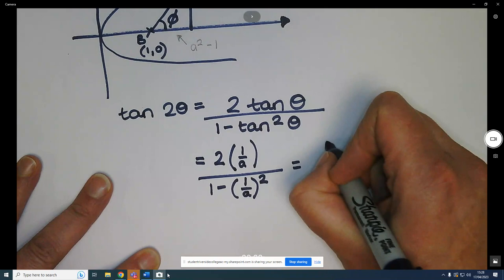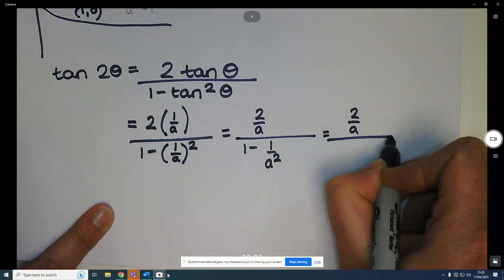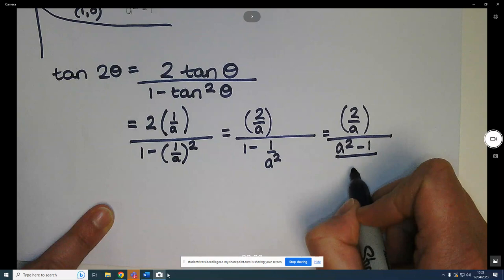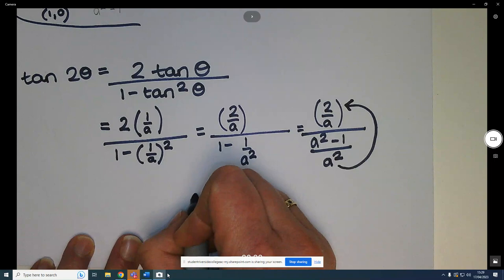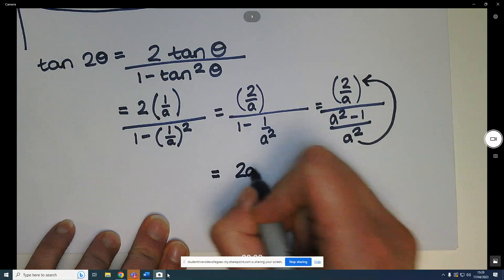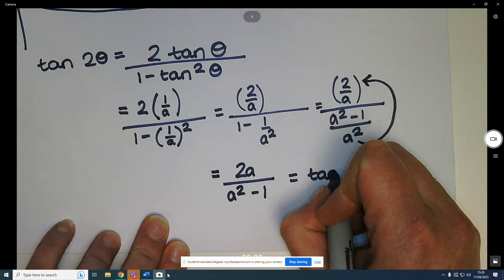And then it's just a question of algebraic manipulation. So you've got 2 times 1 over a gives you 2 over a. That's over 1 minus 1 over a squared. Let's multiply everything on the bottom by a squared. That gives us a squared minus 1 all over a squared. Now as you know, when you're dividing by something in your denominator, you can take it up to the top. This a should come down here, but it doesn't matter because we're going to cancel this out now. So that gives us 2a squared over a, so that gives you 2a, and on the bottom you've got a squared minus 1, which is equal to tan of phi. Because you found that before. End of proof.